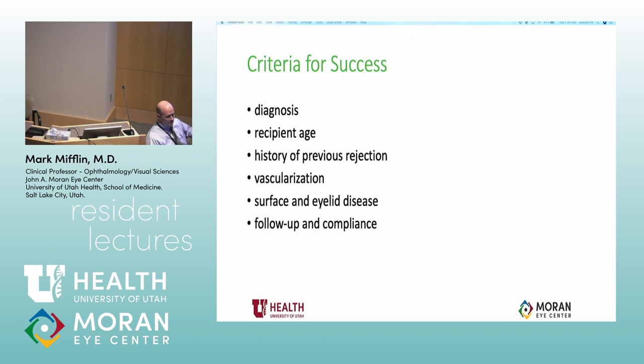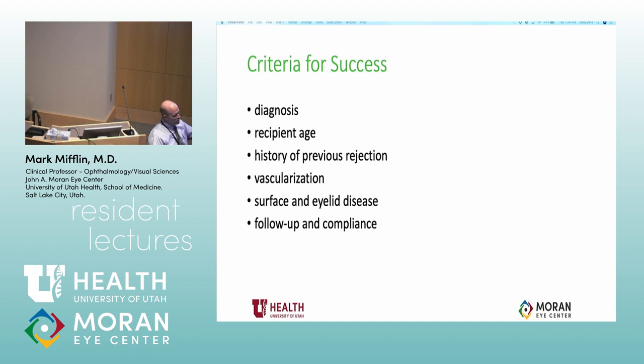The criteria for success for corneal transplantation is very dependent on the pre-surgery diagnosis. For example, Stevens-Johnson syndrome would have a horrible prognosis and keratoconus would have a great prognosis. Recipient age is counterintuitive — generally, the older the recipient, the better they do, because they don't have such a strong immune system. Patients with poorly controlled ocular surface disease do not do well with penetrating or anterior lamellar keratoplasty, though with EK they do better.